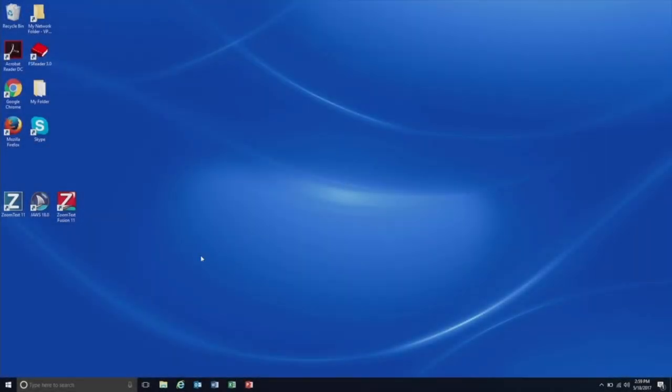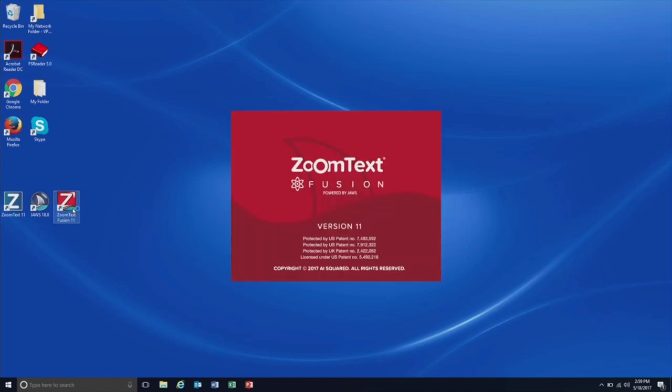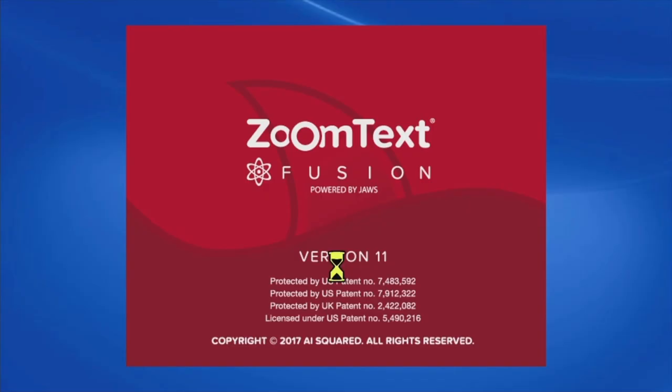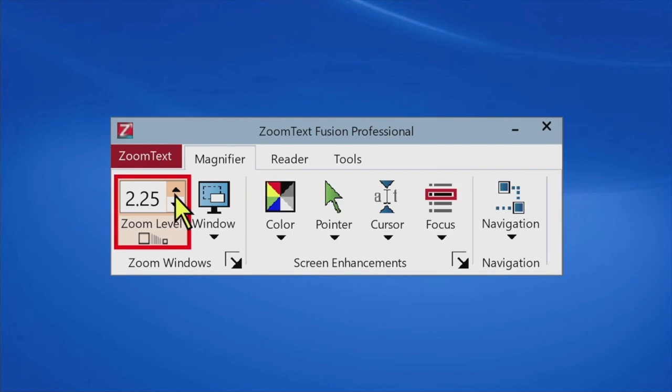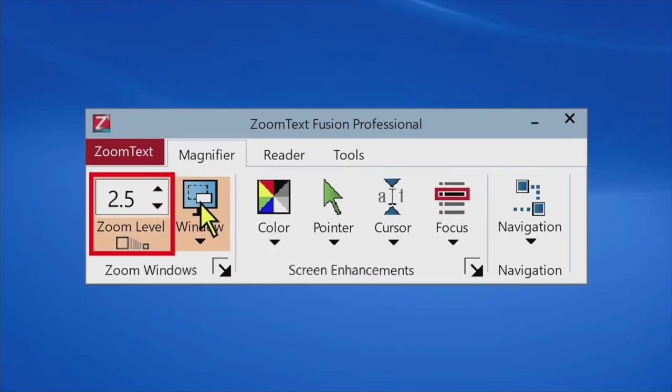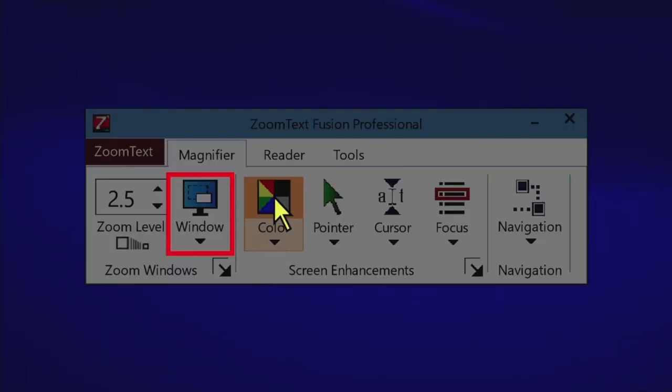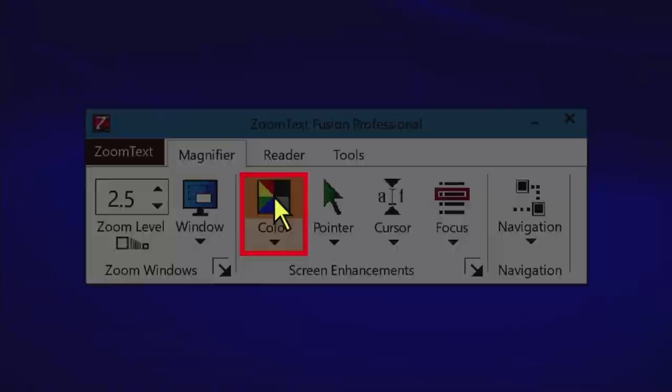When you first start ZoomText Fusion, you'll be greeted with the ZoomText toolbar. For existing ZoomText 11 users, all of your magnification related settings and features you're already familiar with will be found here on the magnifier tab. Color enhancements enabled. Color enhancements disabled.